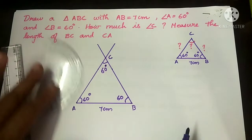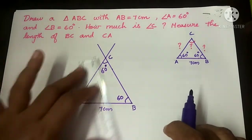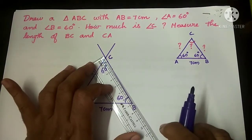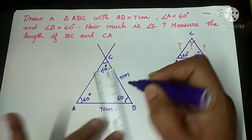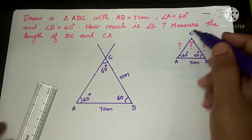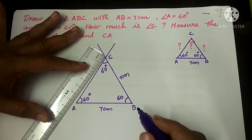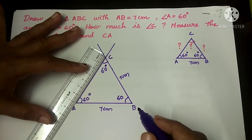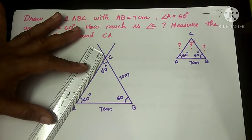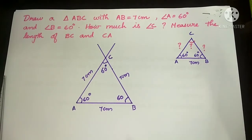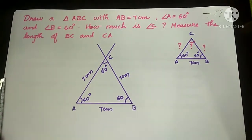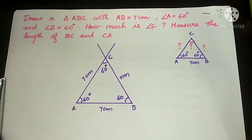Next, we have to find the length of BC. By using the scale, we can find BC is 7 cm. Again, we find the length of AC — it is also 7 cm. So this is our required triangle. When all the angles are the same, we call this triangle an equilateral triangle.